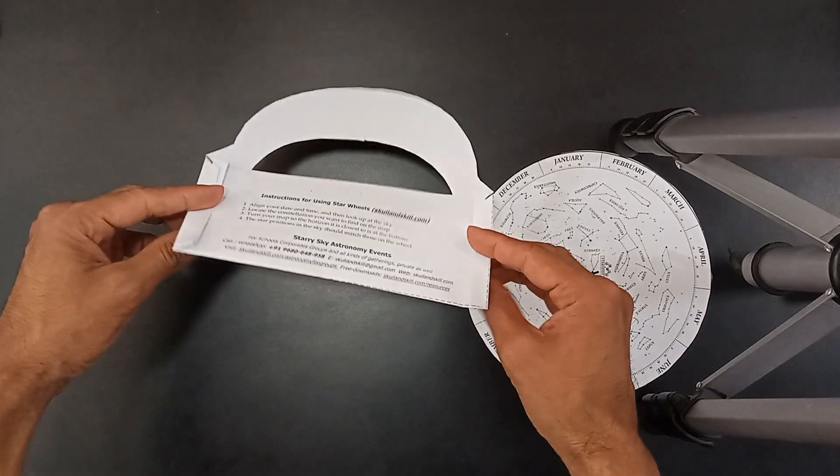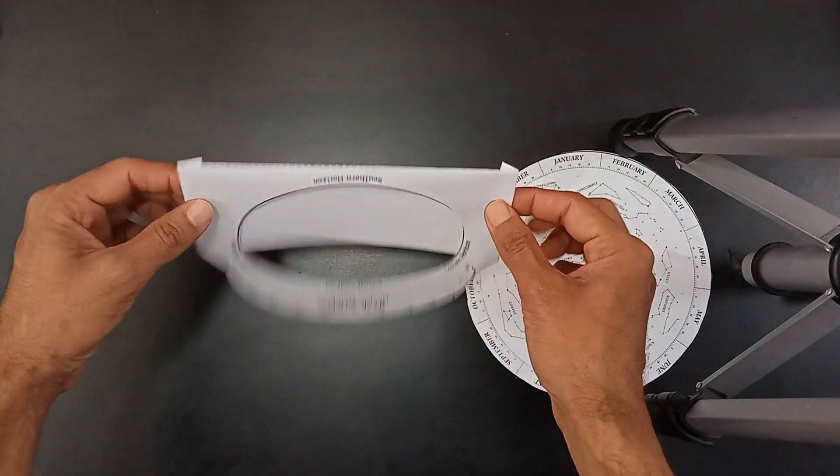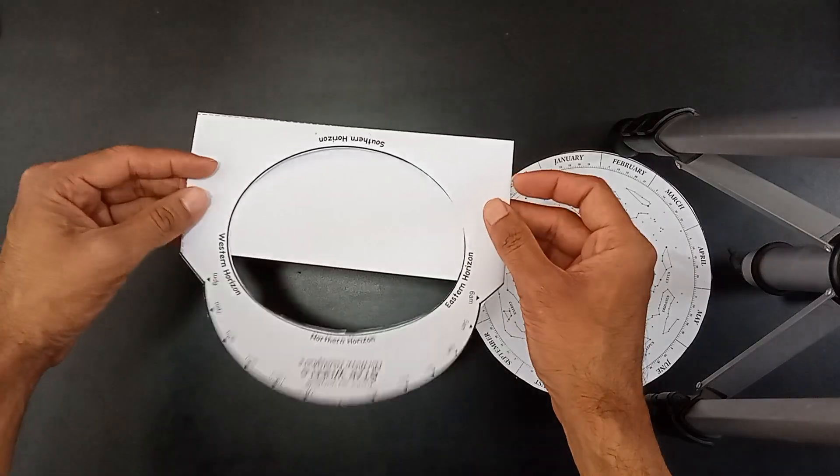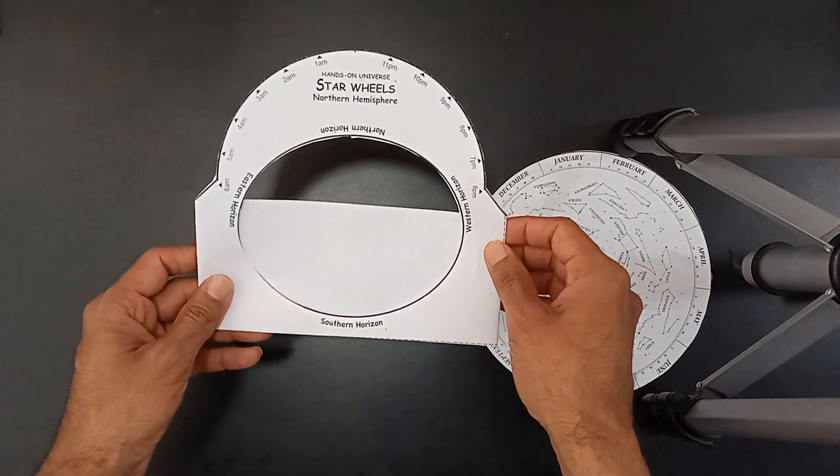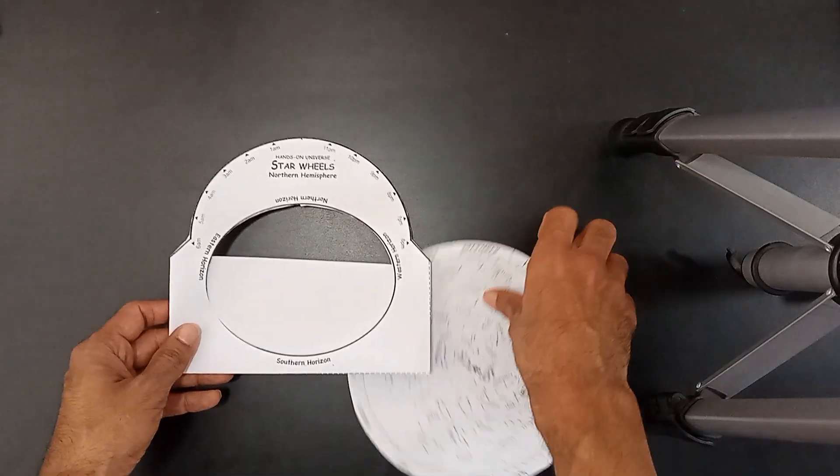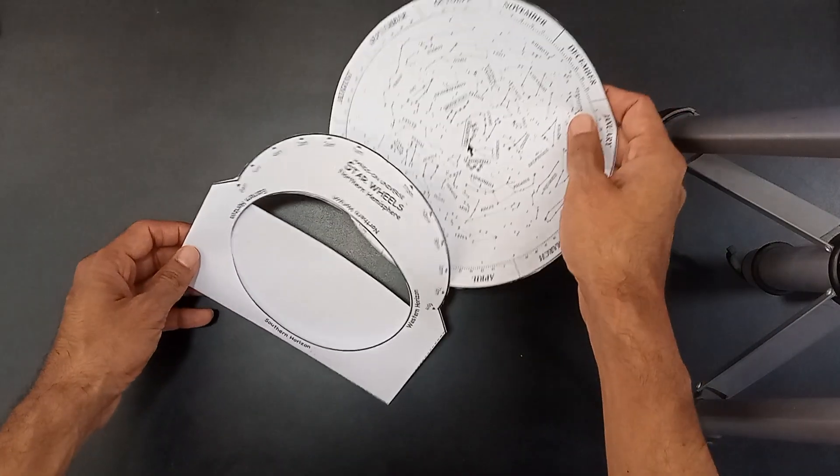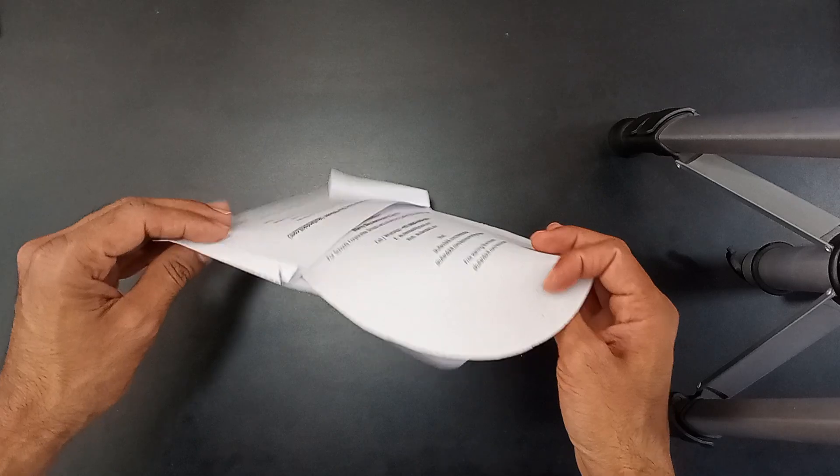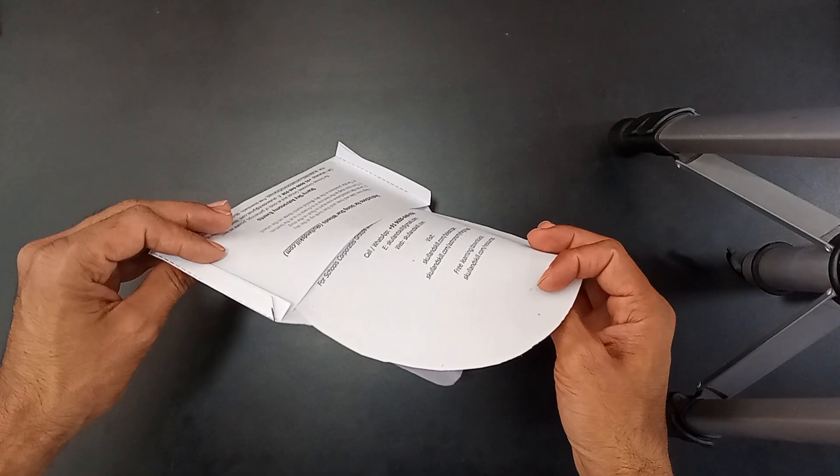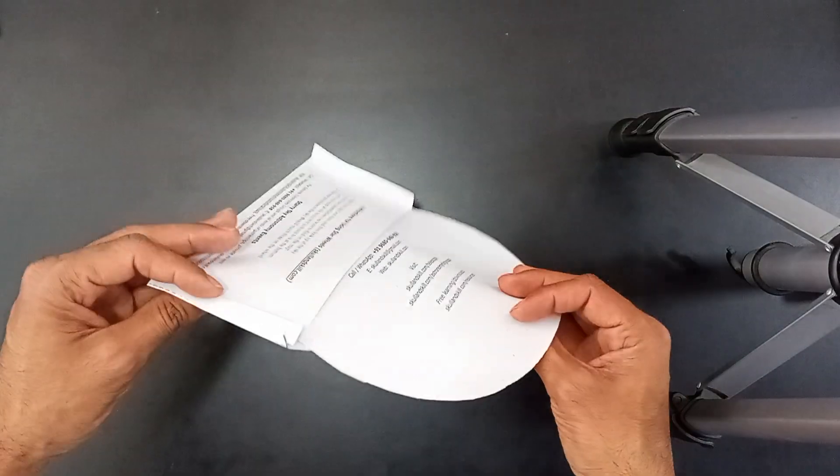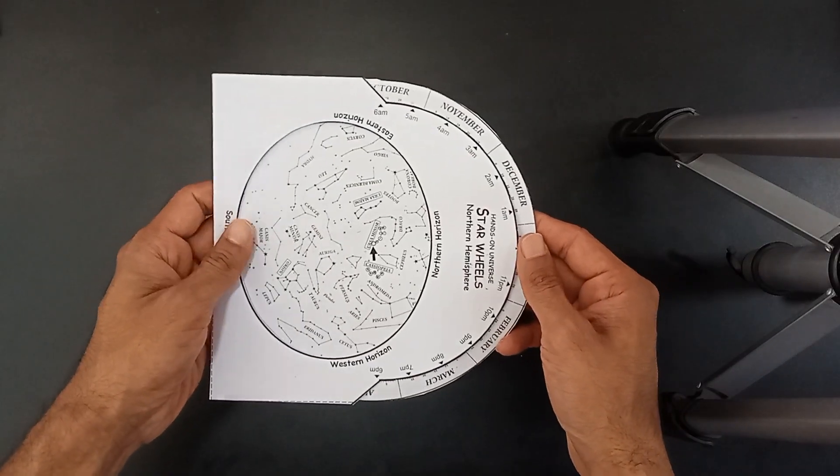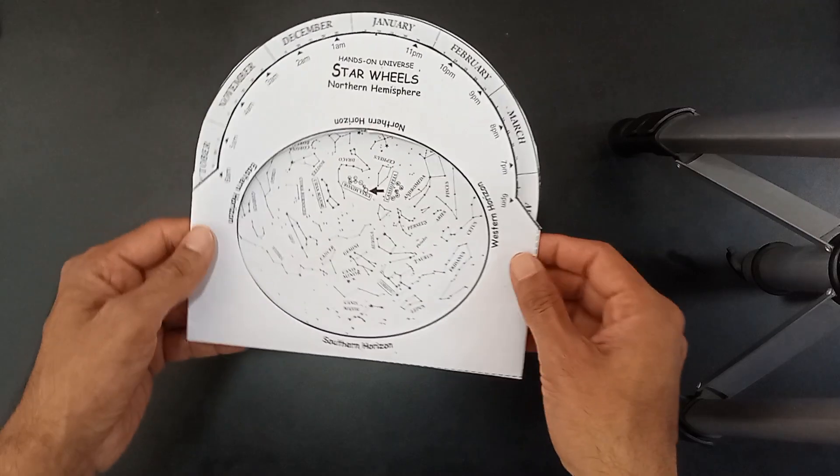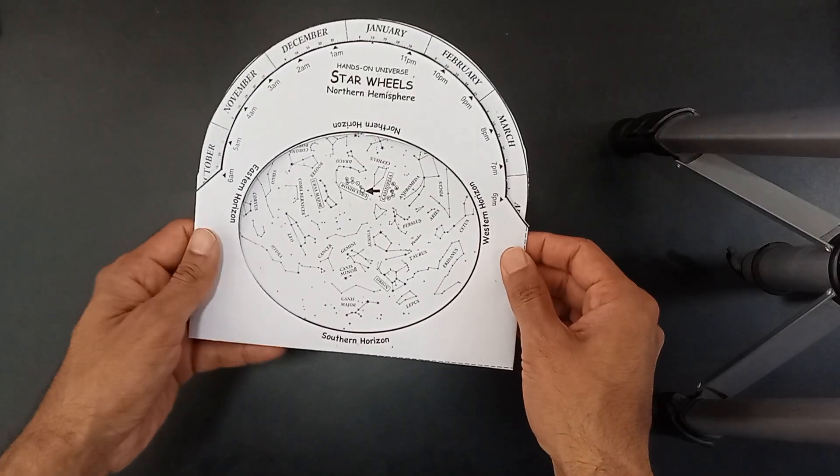Once you have folded it along the dashed lines, it will look something like this. This is the front portion. You have to take this sky map and put it inside from the back pocket. There is a pocket at the back which you have already made by folding it. So there is a back pocket. Now you can put it inside like this. This is your planisphere ready to be used at night.